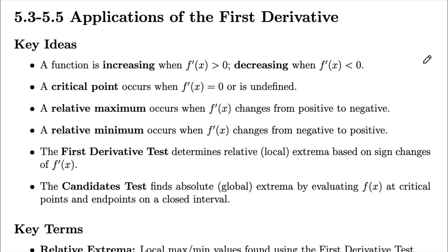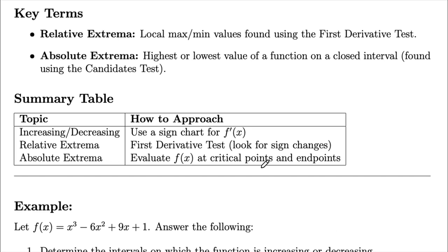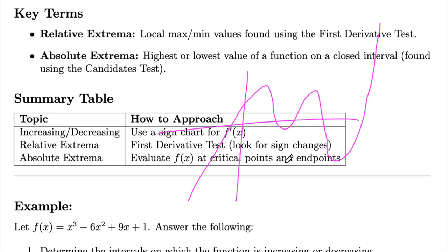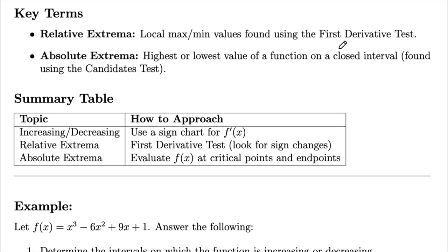We can also use the candidates test to find absolute or global extrema — I have a more in-depth video on that. To review key terms: relative extrema means you have something higher or lower relative to the other points around it. So a relative minimum is lower than neighboring points, but an absolute minimum is the absolutely lowest point of the function. Similarly, a relative maximum is higher relative to its neighbors, while an absolute maximum is the absolutely highest value.